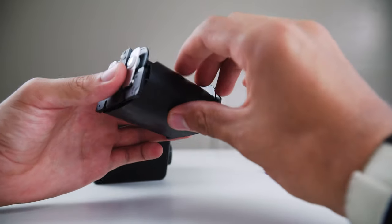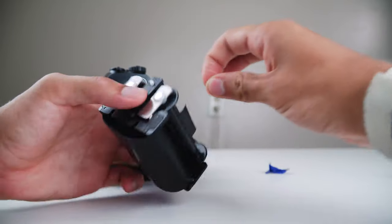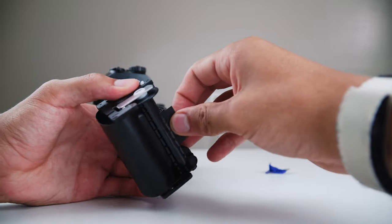The bottom spool will have little slits in it that you stick your film into. Once you get your film through, give it a nice little tug to make sure it's all the way in. And then you can begin to roll the spool.